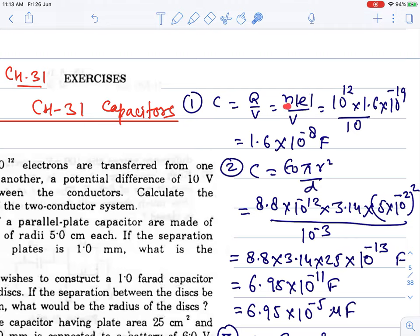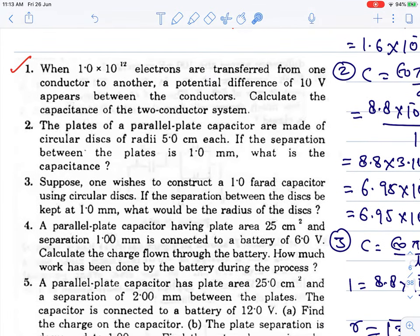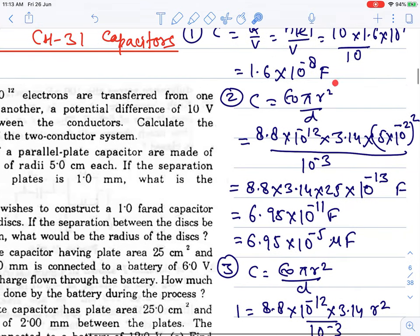Question number 2: The plates of a parallel-plate capacitor are made of circular discs of radii 5.0 cm each. If the separation is given, what is the capacitance? The parallel-plate capacitor formula is C = ε₀A/d, where A is the area of each plate. Area equals πr². Put the value of πr² and simply do the calculations. This is the answer.